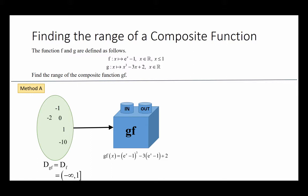Let us look at an example of feeding one value from this domain into our machine. Let's say we take 0 and put it into our machine of gf. gf will act on this value and come up with an output, in this case which is 2. This output will form a set of values that is known as the range of gf.